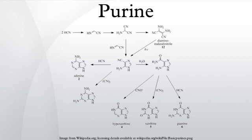Purine sources: purines are found in high concentration in meat and meat products, especially internal organs such as liver and kidney. In general, plant-based diets are low in purines. Examples of high purine sources include sweetbreads, anchovies, sardines, liver, beef kidneys, and brains.